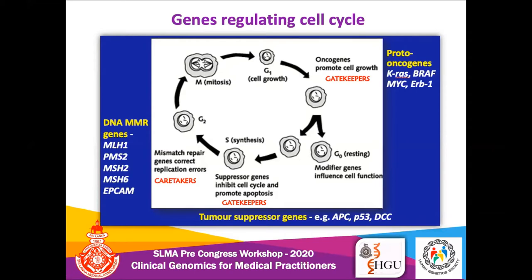Looking at the gatekeepers, we have proto-oncogenes like KRAS, BRAF, and MYC, whose main purpose is to promote cell division and growth. Then we have tumor suppressor genes like APC and TP53, which are also referred to as gatekeepers. They inhibit the cell cycle and promote apoptosis.